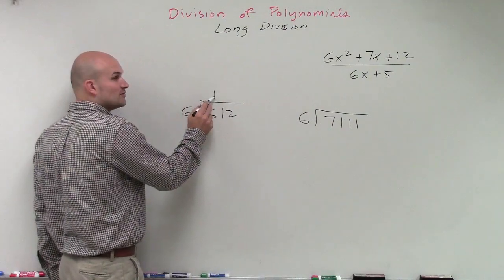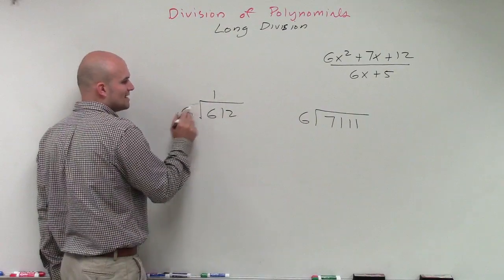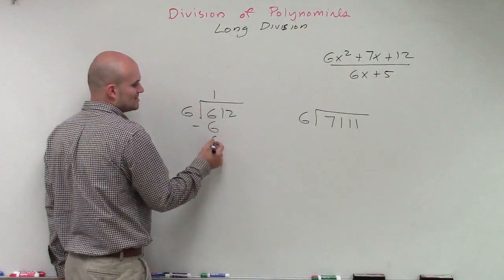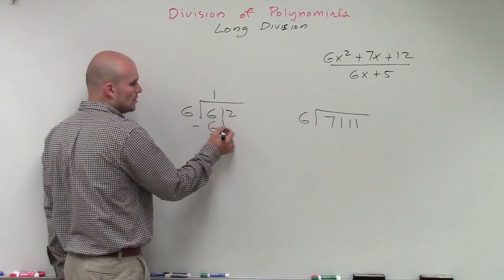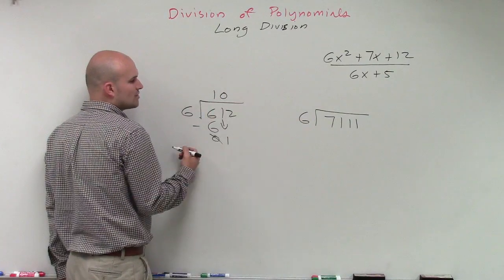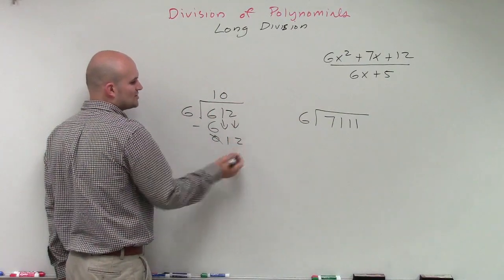Then we multiply our first term dividend down. So it's 1 times 6, it's going to be 6. Then we subtract the rows. 6 minus 6 is 0. Then we bring down the next number, which is 1. 6 does not divide into 1, so we're going to put a 0 up here. And then we bring down the next term as 2.